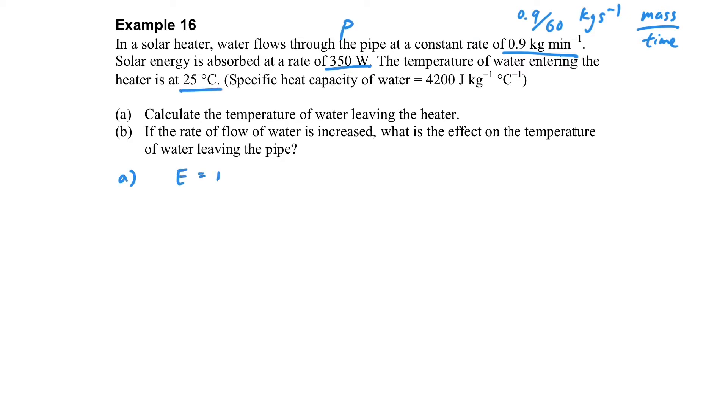Power is provided by the Sun and also the temperature of the water entering the heater. How to calculate the temperature leaving the heater? We can use Pt equals mc delta T and by arranging the subject so that we can form m over T. Then we can substitute the flow rate into it, then we are able to calculate the temperature.